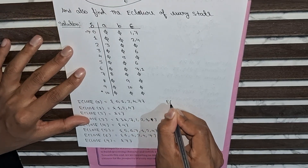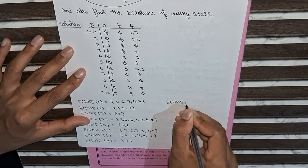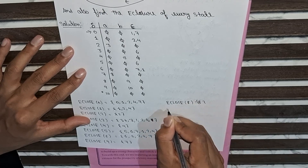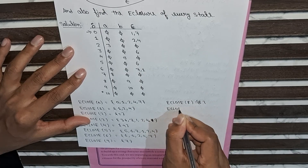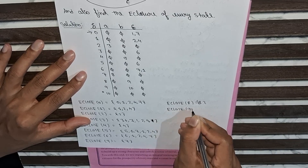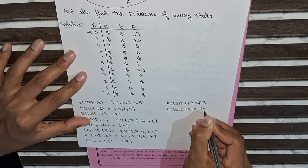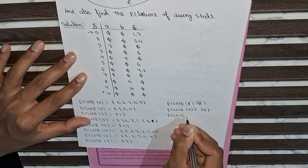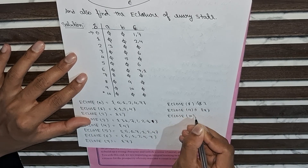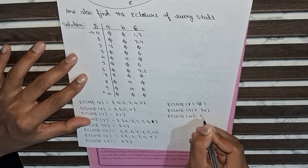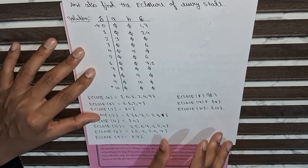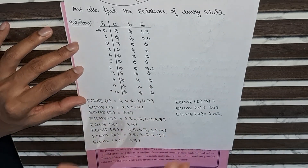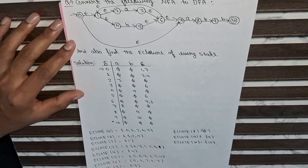E-closure of eight is eight only. E-closure of nine is nine only. E-closure of ten will be ten only. Like this we find the e-closure of all the states given in the NFA diagram. Now we will make the transition table for the DFA with the help of these e-closure values.